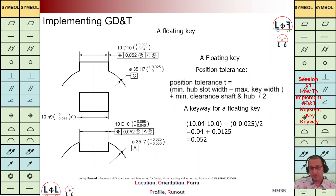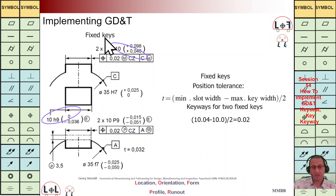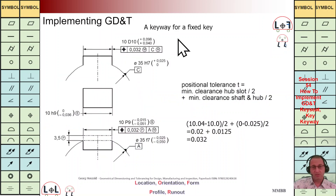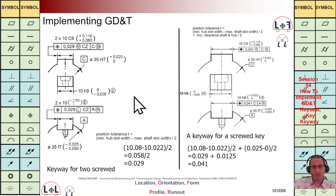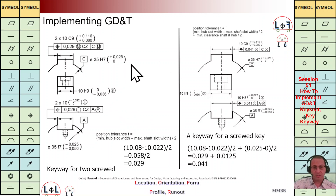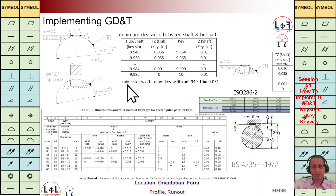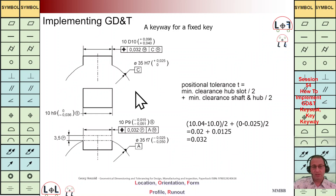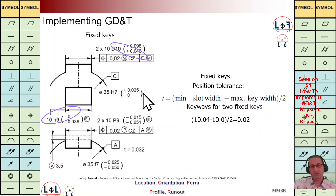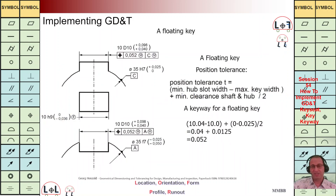For now I would like to close this session. In a coming session I am going to talk about this key assembly again — whenever we have fixed keys, or just one fixed key, or a set screw with one or two keys, and then if we have an interference key, what should be the positioning TZ. Thank you for today, I hope you enjoyed it — see you next time.